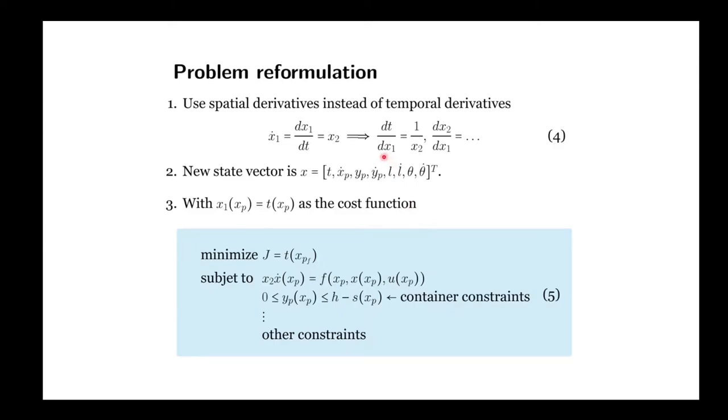If we were using the cost function as in equation 4, which would be the natural way of doing this, we would have convergence problems since the payload has zero velocity in the initial and final position. To circumvent this, we use the first state variable, that is now time, as the cost function. Then, we obtain this new formulation as the blue box here.